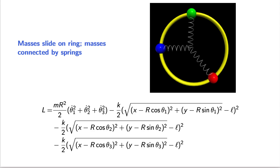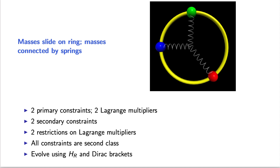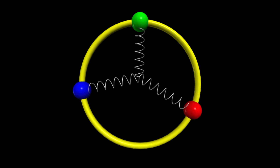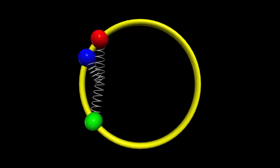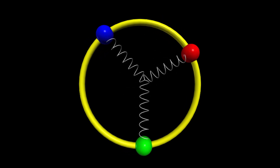The next system consists of three masses that slide freely along a ring, connected with springs. The generalized coordinates are the angles of the three masses and the coordinates of the points where the springs connect. For this system, there are two primary constraints and two Lagrange multipliers, two secondary constraints, both Lagrange multipliers are restricted, and all four constraints are second class. The simulation shown uses equations of motion generated by the reduced Hamiltonian and Dirac brackets.